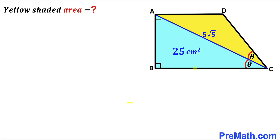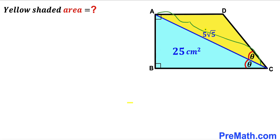Welcome to pre-math. In this video we have trapezoid ABCD, which consists of two triangles: the blue right triangle ABC and the yellow triangle ACD. The area of the blue triangle is 25 cm², the side length AC is 5√5 centimeters, and angle ACB is equal to angle ACD — in other words, these two angles are congruent.